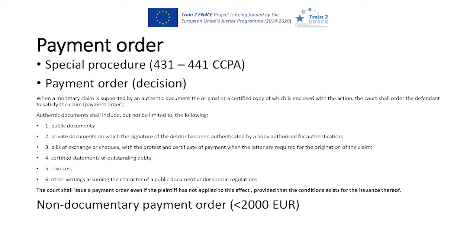Moving on to payment order: this is a special procedure encapsulated within the general contentious civil proceedings law act. The court will issue a payment order if the claimant presents an authentic document. I use the term 'authentic document' to distinguish it from the 'authentic instrument' terminology as used by the Brussels 1A regulation. The court can issue the payment order regardless of the value in dispute.